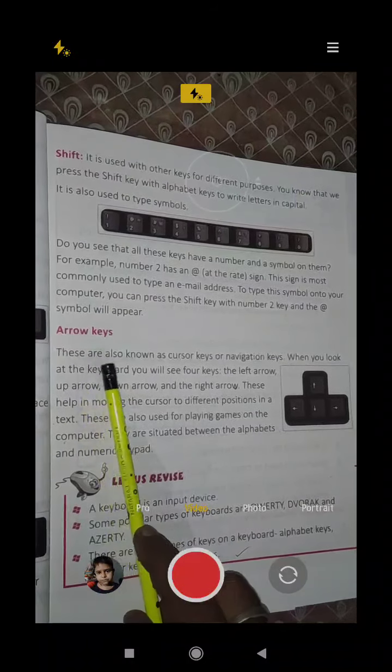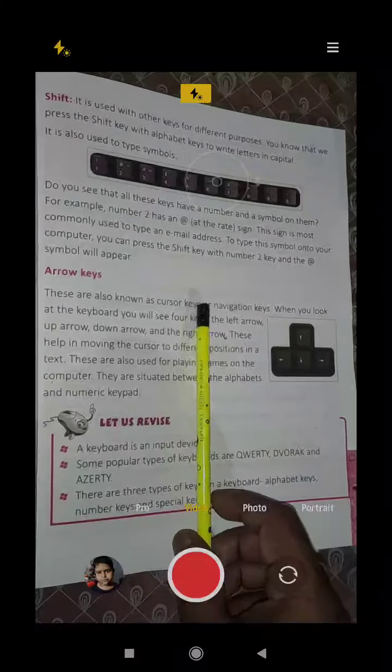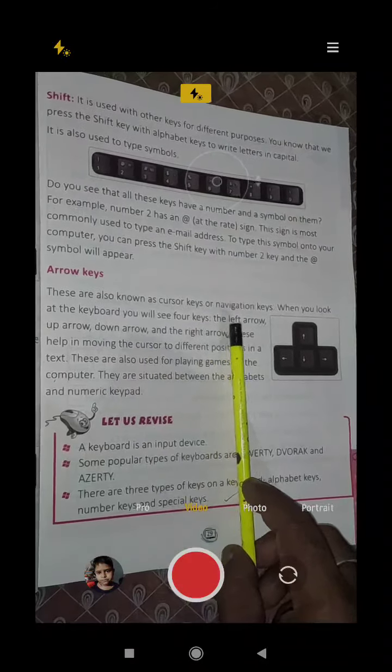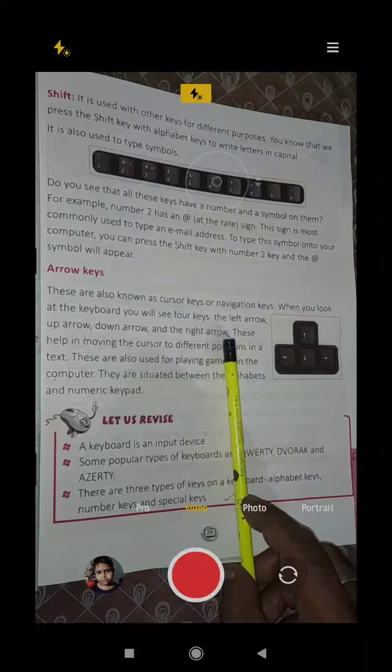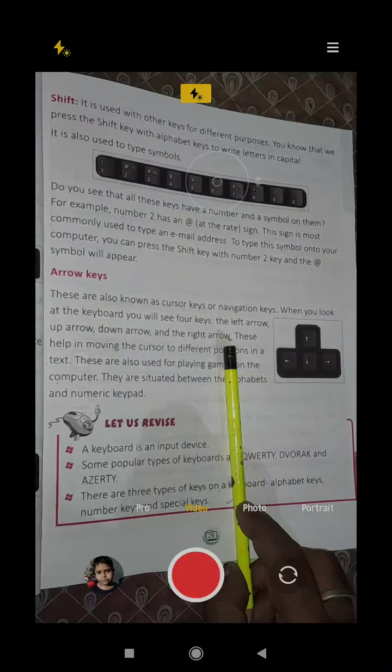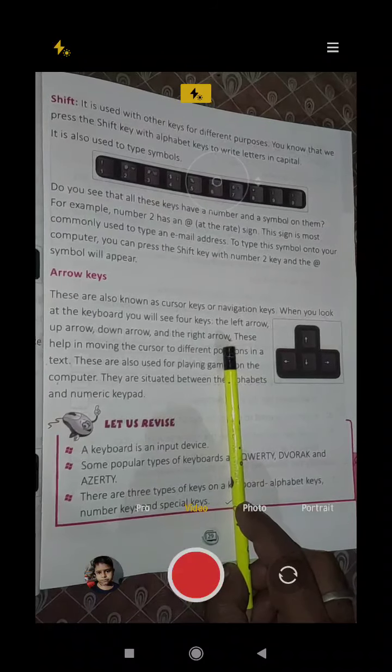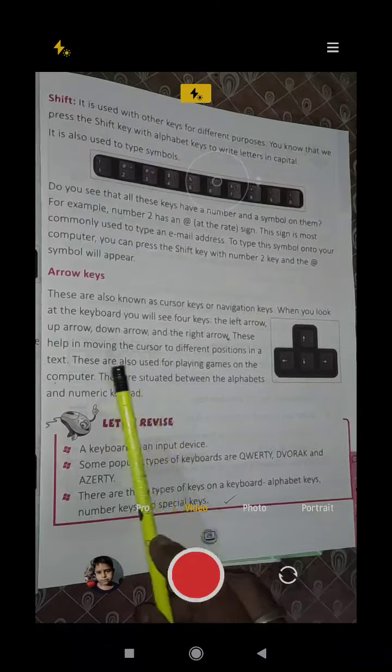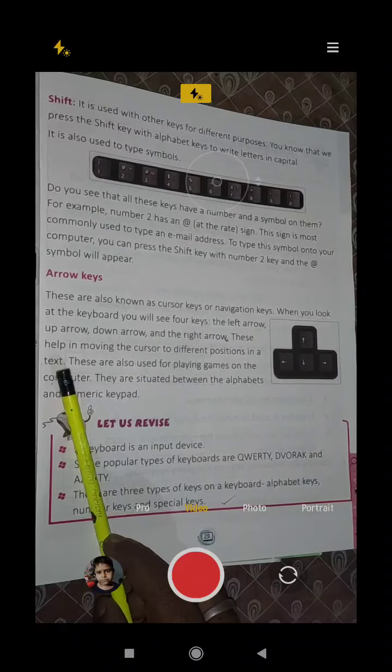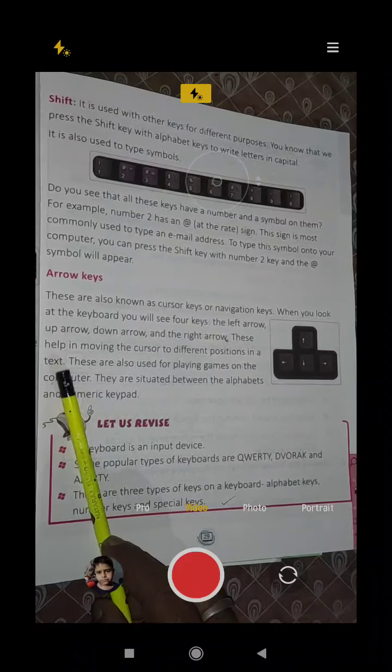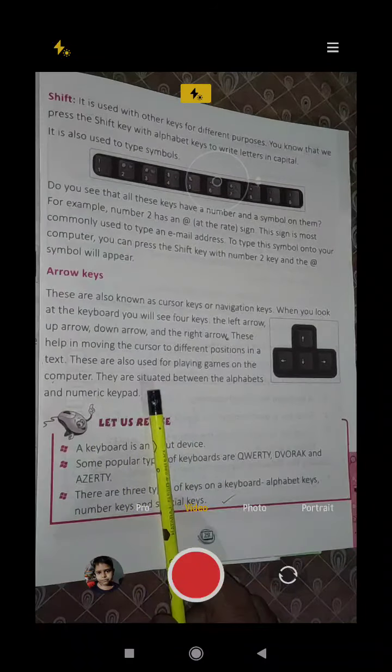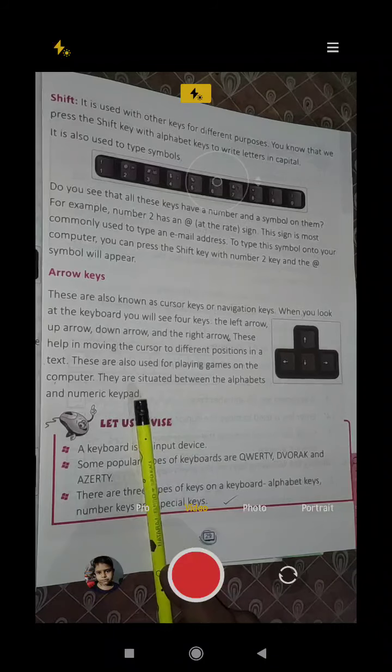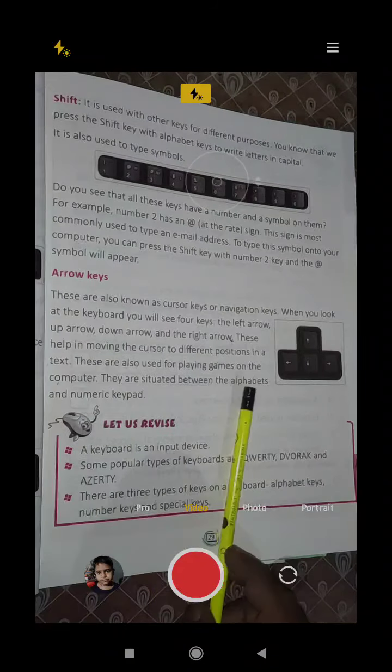Now the arrow keys. These are also known as cursor keys or navigation keys. When you look at the keyboard, you will see 4 keys: left arrow, up arrow, down arrow and right arrow. This helps in moving the cursor to different positions in a text. They are situated between the alphabets and numeric keypad.